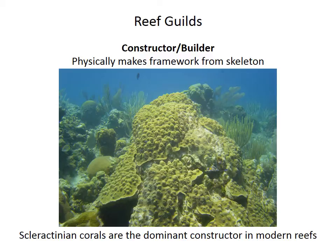Reefs can be made by a variety of organisms, and those organisms can be grouped into what are called guilds. A guild is an ecological category that groups organisms that fulfill a certain function within an ecosystem; in this case, organisms that play a similar role within the reef.